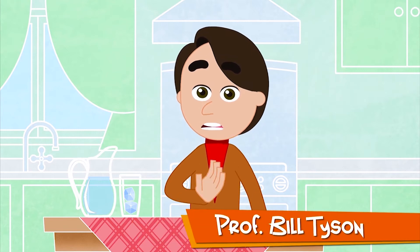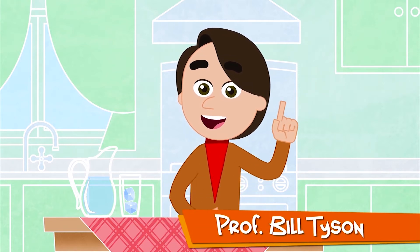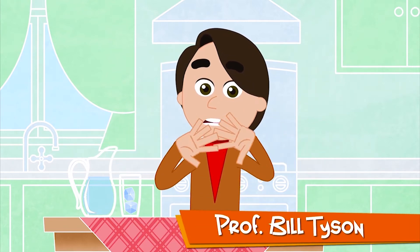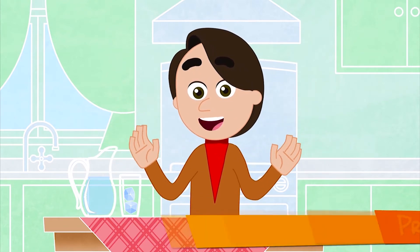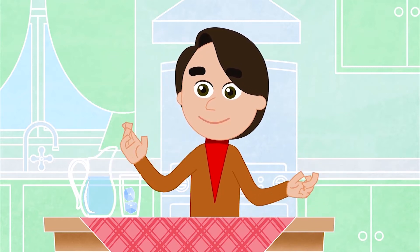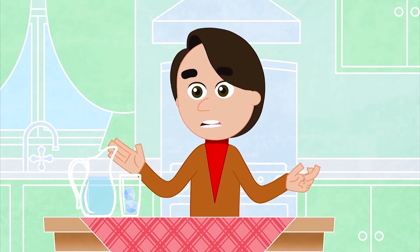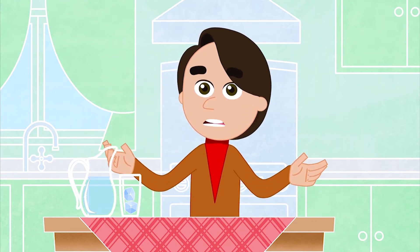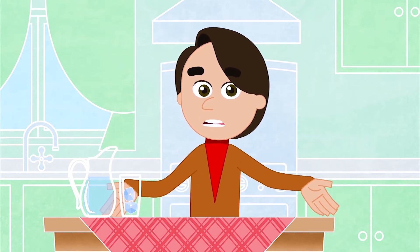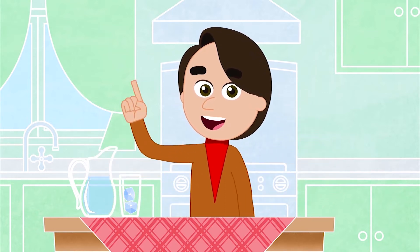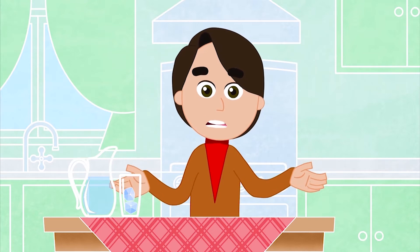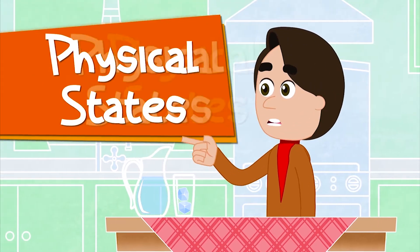Hello Little Scientists! I'm Professor Bill Tyson and together we're gonna learn about different forms of science. We've already talked about matter and how it forms almost everything around us. Today, we'll talk about how we find it in our daily life. Matter can be seen in different physical states.